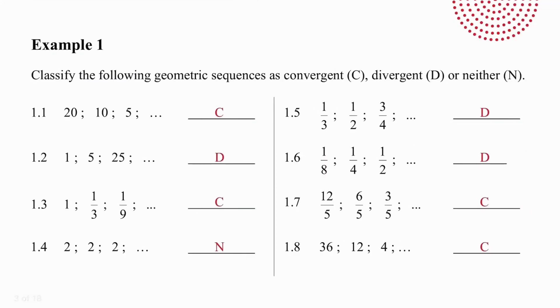In example 1.1, the sequence is convergent because the ratio is a half. In example 2, the sequence is divergent because the ratio is five, which is greater than one. In example 3, the sequence is convergent because the ratio is a third. In example 4, it is neither convergent nor divergent because the ratio is one.